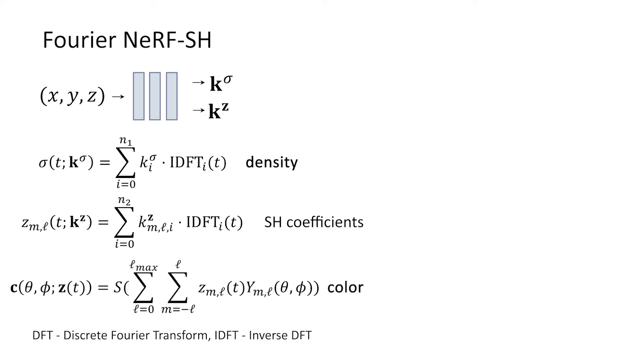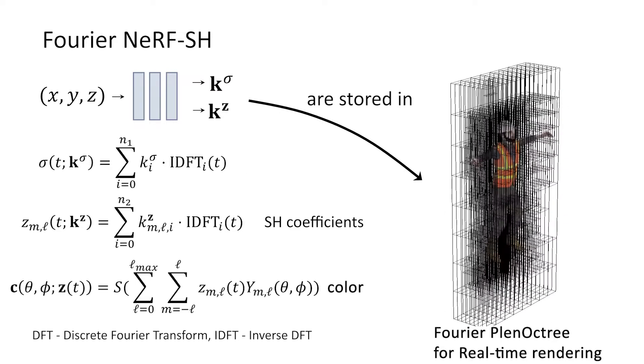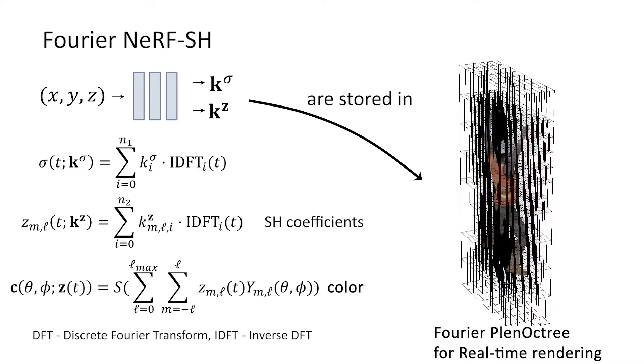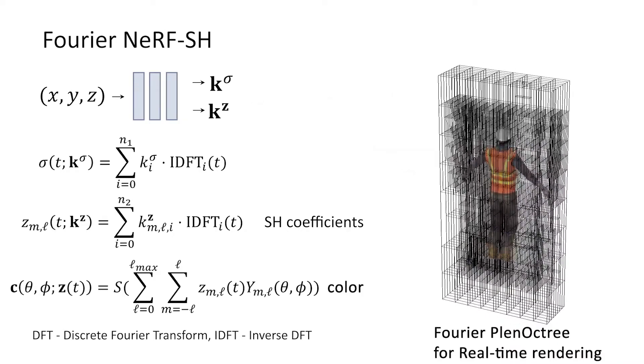Similar to NeRF-SH, view-dependent color can be calculated from SH coefficients. Furthermore, we can also convert it to a Fourier Plenochtree, which enables a real-time rendering ability of dynamic scenes.